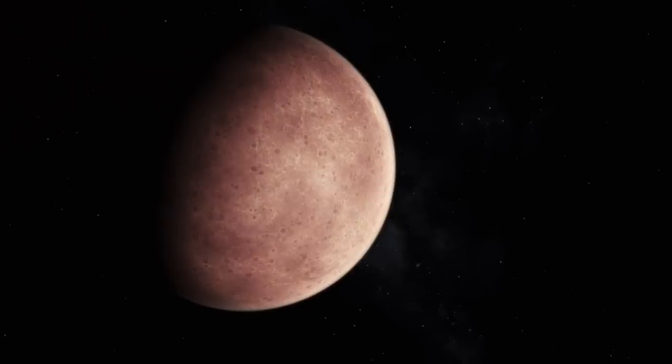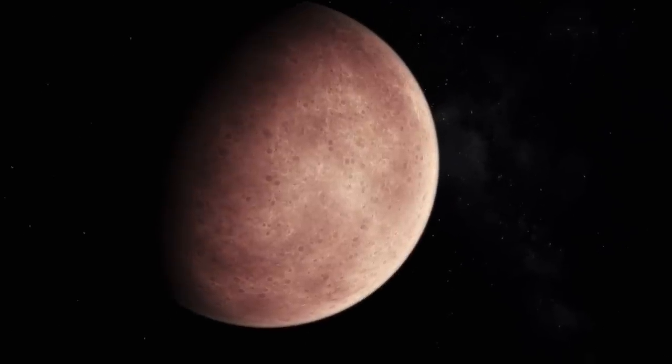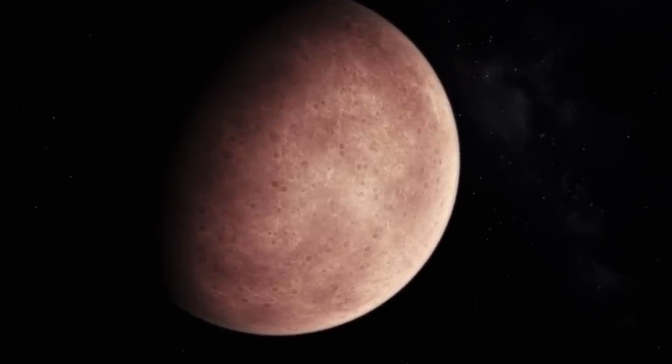However, this planet is only 8 million kilometers, or 5 million miles, from its main star, 7 times less than the distance between Mercury and the Sun. Its orbit places it between the main star and the other two, which are much further away.